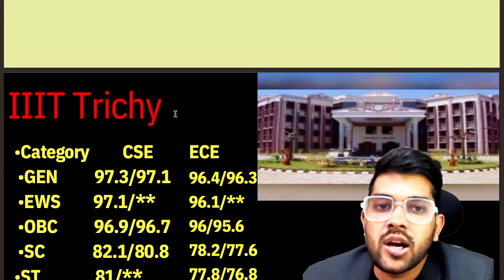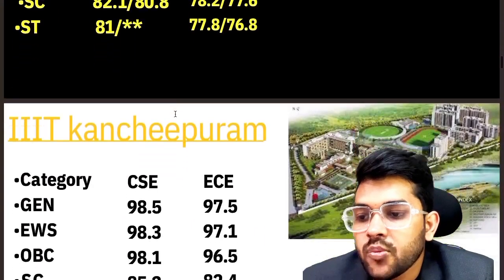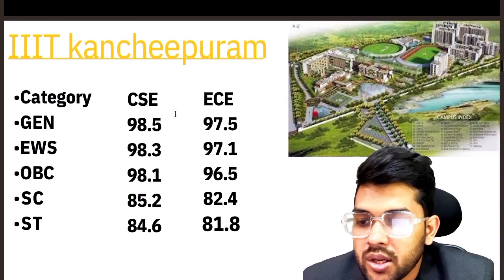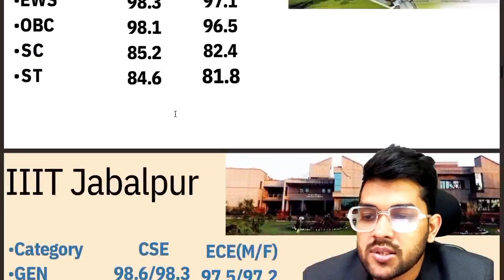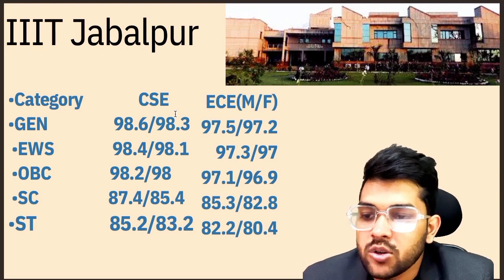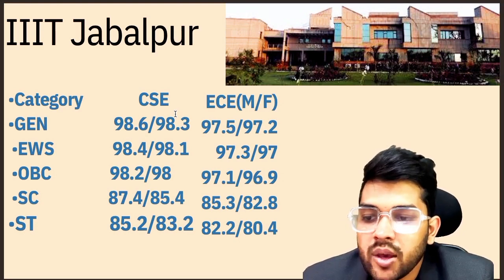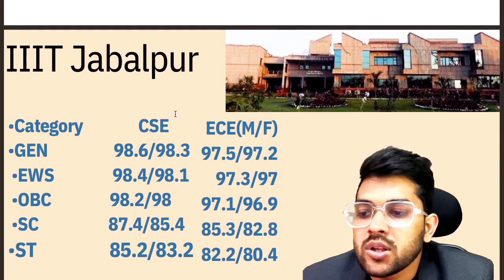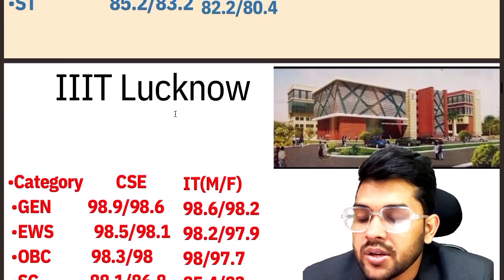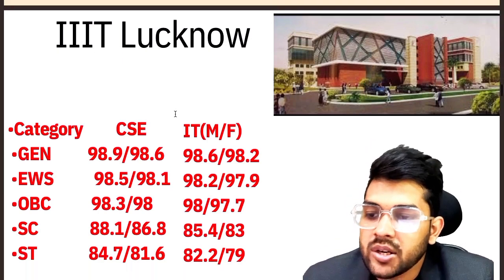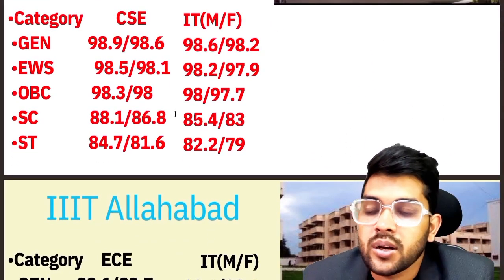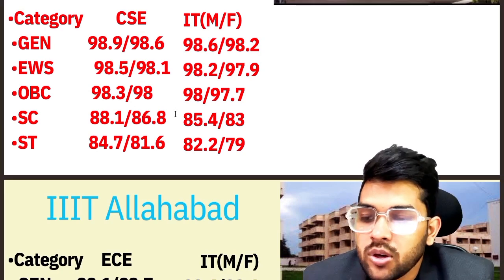For IIIT Kanchipuram: 98.1, 98.5, 98.3, 98.1, 85.2, 84.6. For IIIT Jabalpur — CSE: 98.6, 98.4, 98.2, 87.4, 85.2. For IIIT Lucknow: 98.9, 98.5, 98.3, 98.1, 84.7. These are among the top 10 IIIT colleges being discussed, with figures given for General, EWS, OBC, SC, and ST categories.